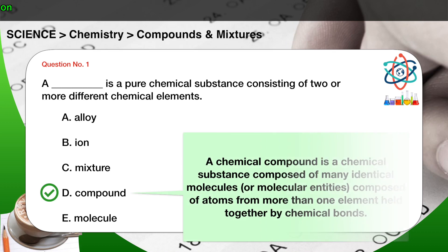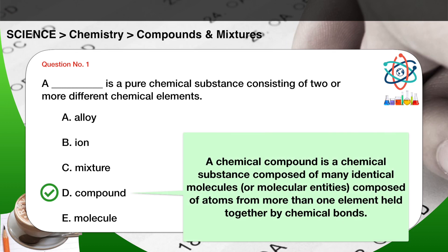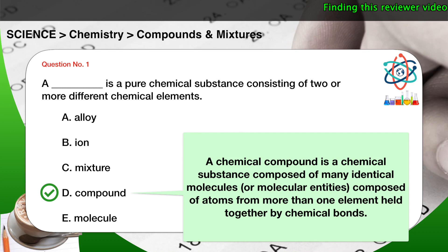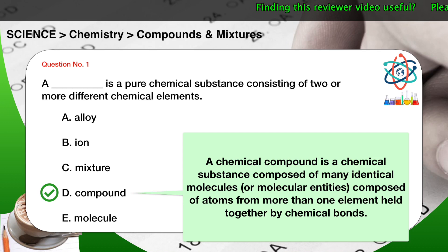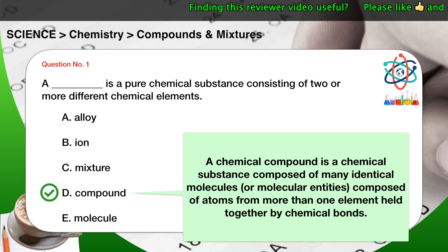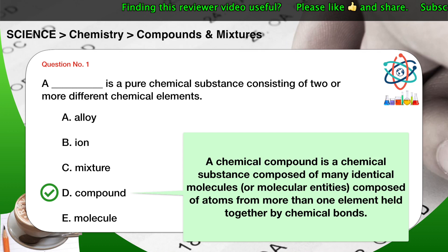The correct answer is D. A chemical compound is a chemical substance composed of many identical molecules, or molecular entities, composed of atoms from more than one element held together by chemical bonds.